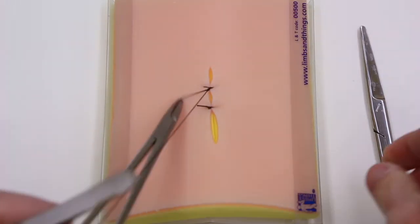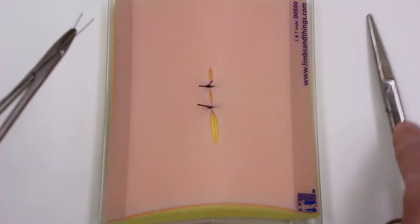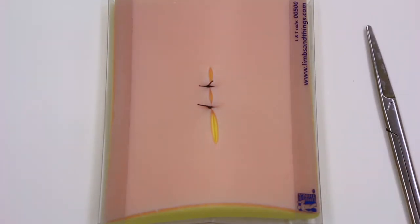I am using silk suture here just because it shows up well, but this is not typically what you'd use to close the skin. Typically you're going to use nylon, proline, some sort of synthetic monofilament.